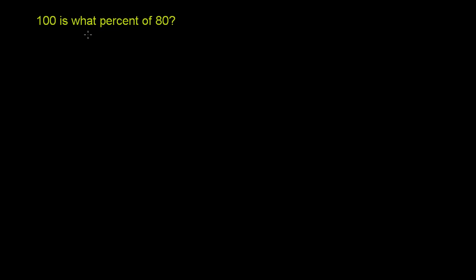You really just have to think through what the language is saying. They're saying that this value right here, this 100, is some percentage of 80. And that some percentage is what we have to figure out, that what percent. So if we multiply 80 by this what percent, we will get 100.